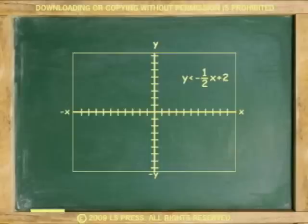Still another example, graph the inequality y is less than negative 1 half x plus 2. Because the inequality is already in slope-intercept form, we can read the y-intercept as 2, and the slope as negative 1 half.